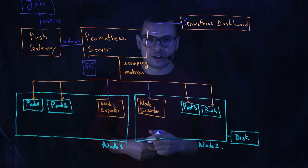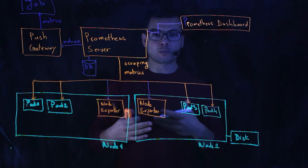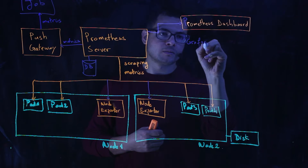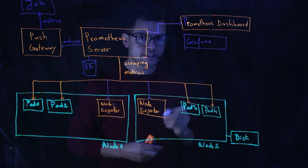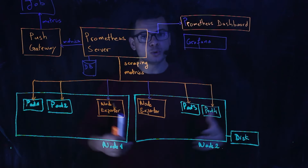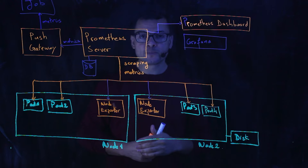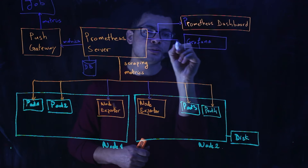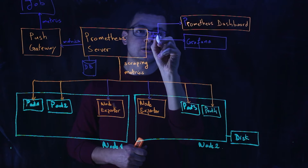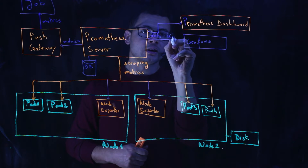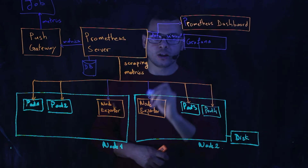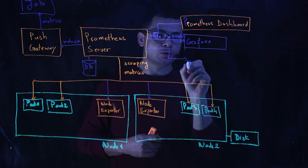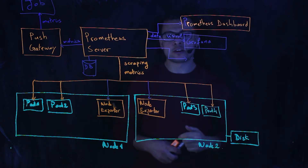Luckily, we have something more evolved: Grafana dashboards. Grafana can create really advanced dashboards where we can see different views and graphs inside the same dashboard. We can share those dashboards with different team members in our development team. That's another option for data visualization. Prometheus is also extendable, so we can use other systems for data visualization as well.